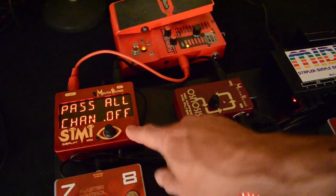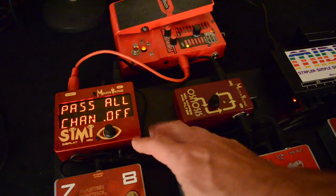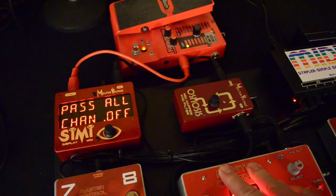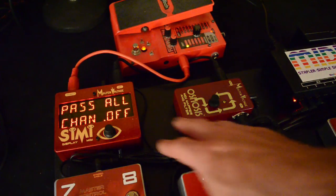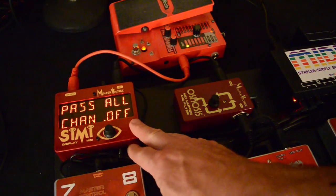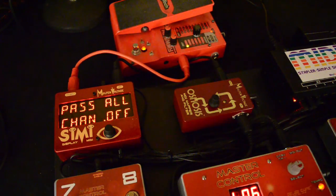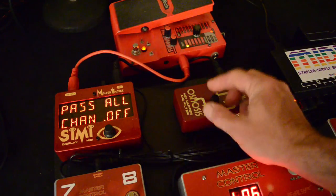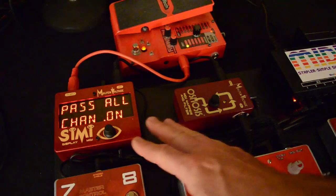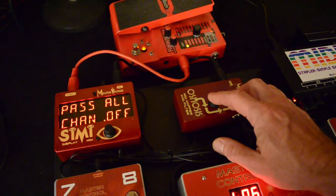Next one is Pass All Channels On or Off. The default is Off. That means program changes that come from your controller, do they all get passed through, or only that MIDI receive channel? If this is Off, only the MIDI receive channel programs get passed through. If this is set to On, then any program change on any channel will get passed through. So we'll leave that one off.